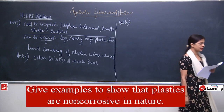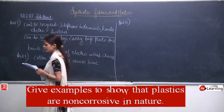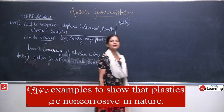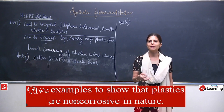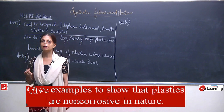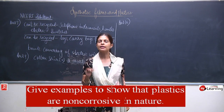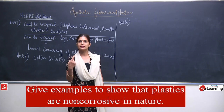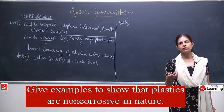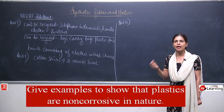Question number 10: Give examples to show that plastics are non-corrosive in nature. We use plastics for many purposes — storing eatables in plastic jars, keeping cleaning liquids in plastic containers. In laboratories, chemicals like hydrochloric acid and sulfuric acid are stored in plastic containers because plastic does not react with them.